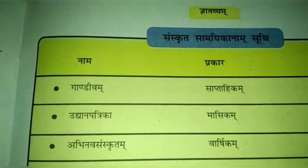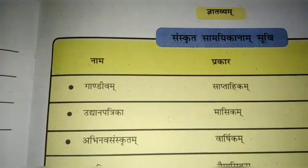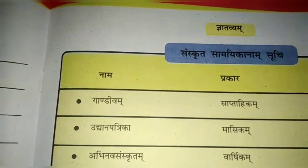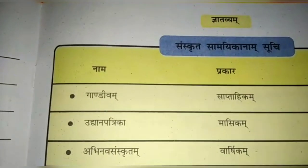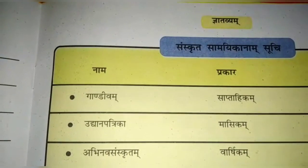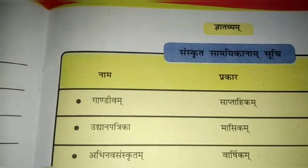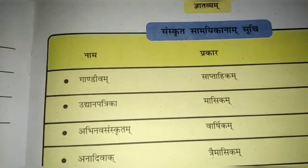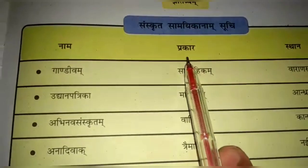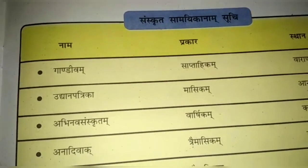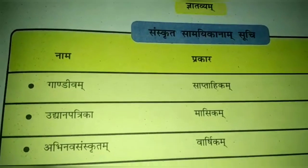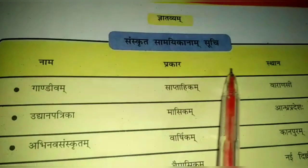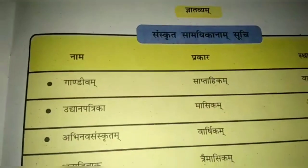Now page number 23. Ghyatavyam means fit to be known. This is a list of Sanskrit magazines — Sanskrit samii ka naam suchi. The columns are: Naam means name, Krakar means type, and Stan means place.